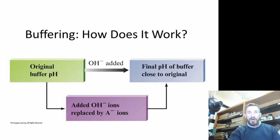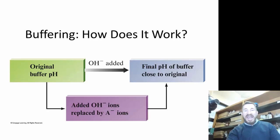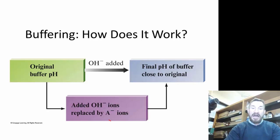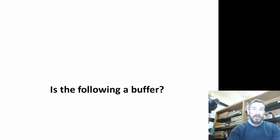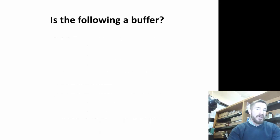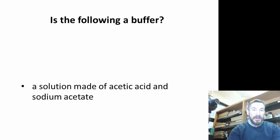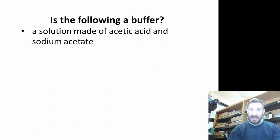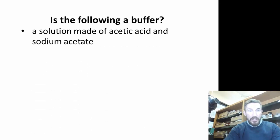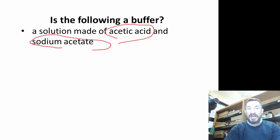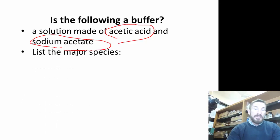How does a buffer work? You add the hydroxide, and the hydroxide is basically replaced by an anion or the conjugate base, and doesn't change the pH very much. So is this following a buffer? A solution made of acetic acid and sodium acetate. I believe that is a weak acid and its conjugate base, so it should be.